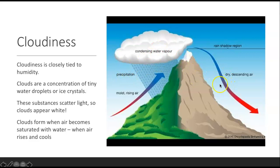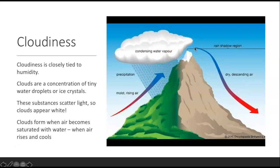On the other side of the mountain, there's no more water vapor to be released — they call it the rain shadow region. One place where this happens is in Hawaii, where on the wind side of the mountain they could get up to 400 inches of rain a year, and on the other side it's pretty arid, almost desert-like. It's pretty interesting how mountains can affect climate, where you're separated by just the width of a mountain, and your climate is completely different.